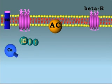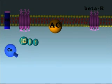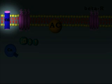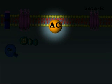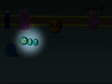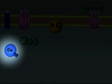First we should understand the diagram. This is the extracellular space, intracellular space, calcium channel, beta-adrenergic receptor, enzyme adenyl cyclase, G-stimulatory protein, and intracellular store of calcium.